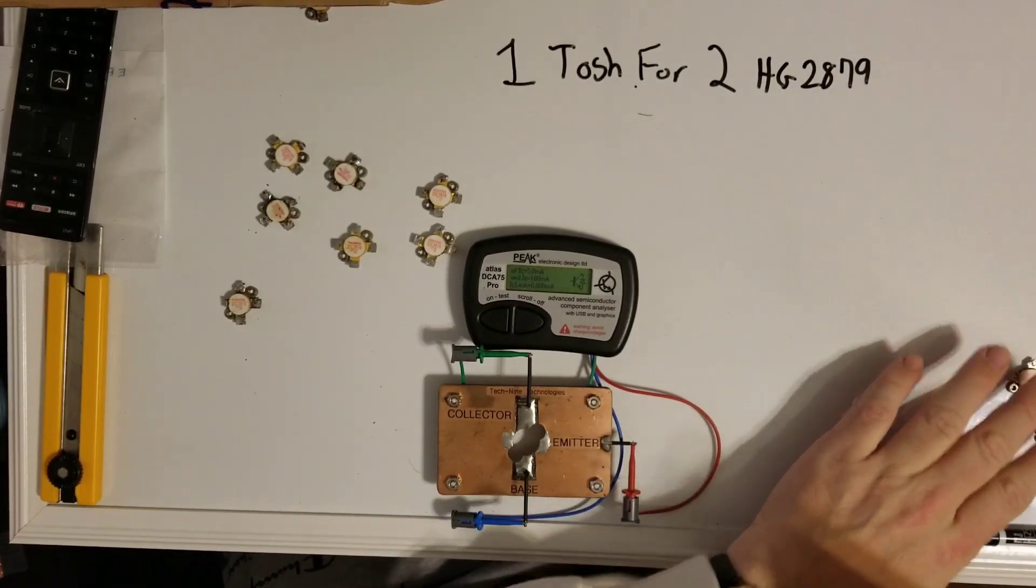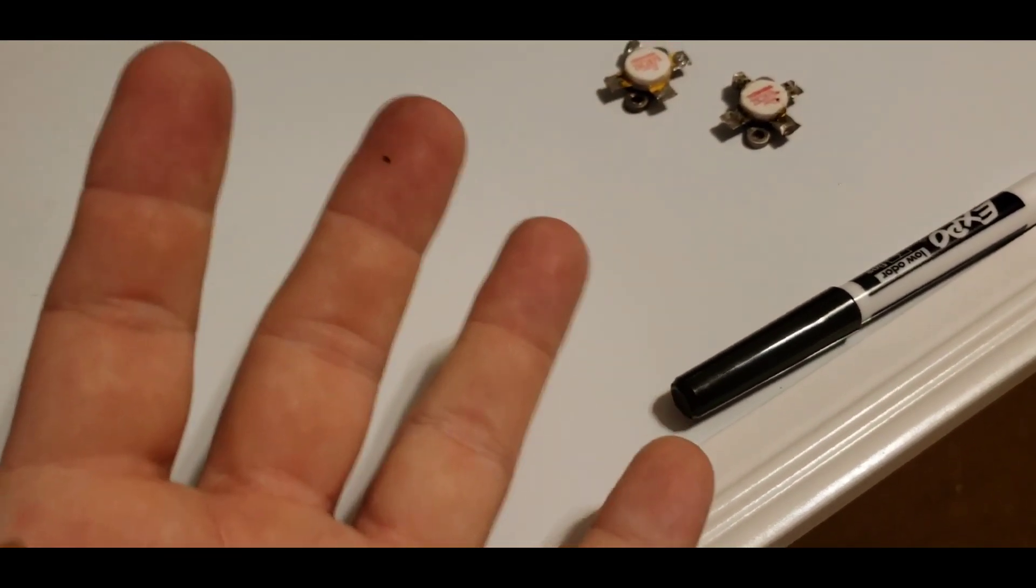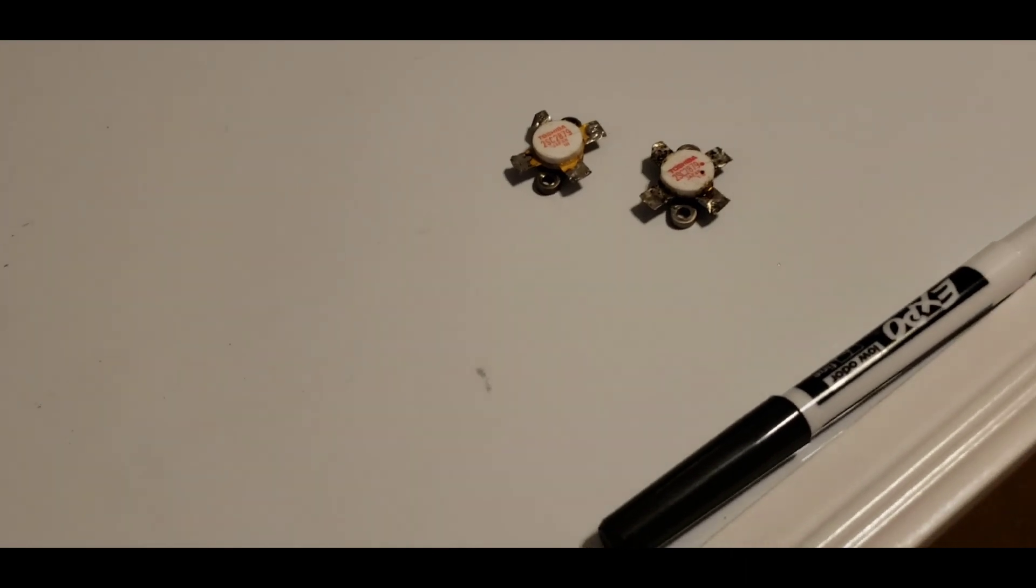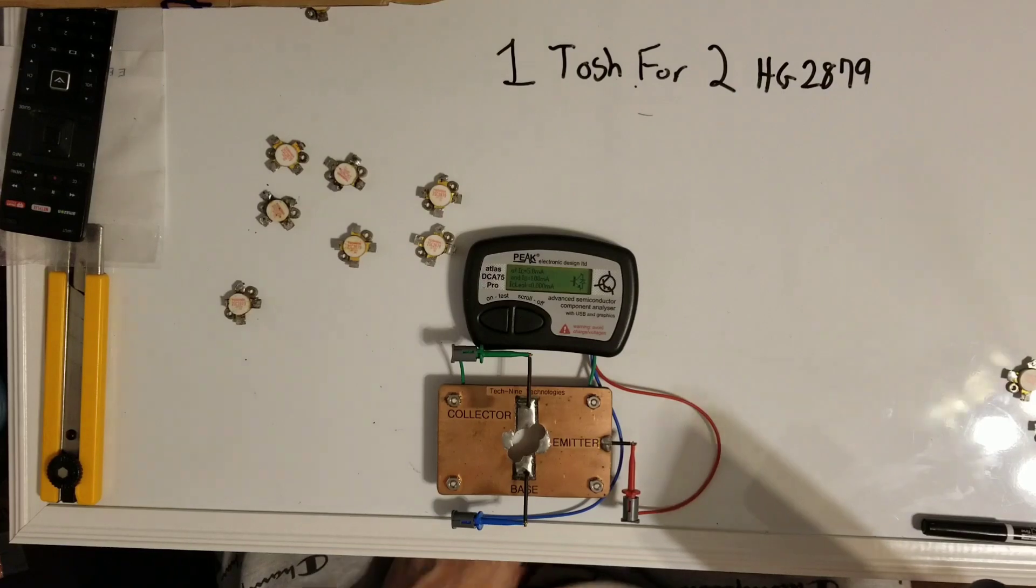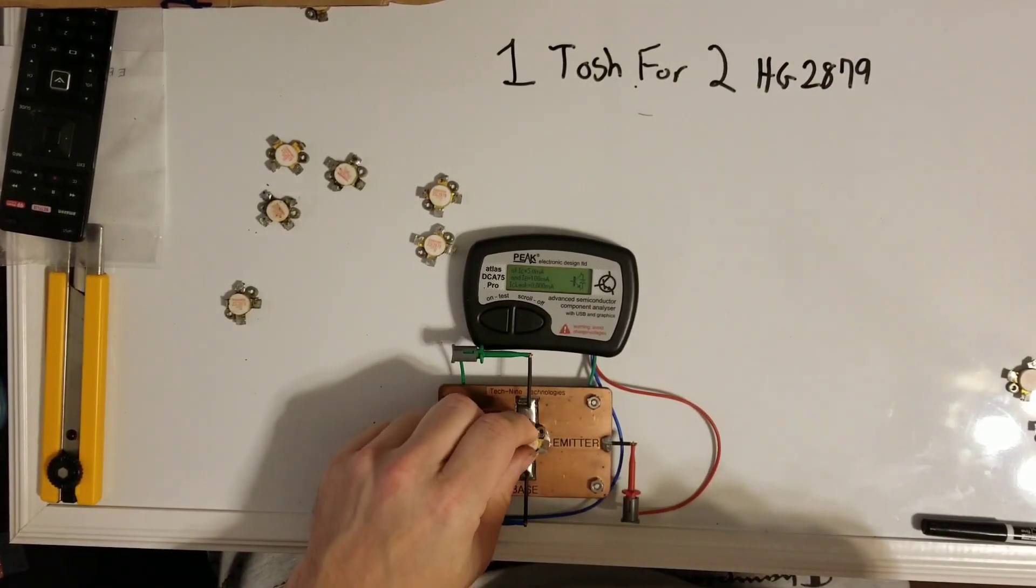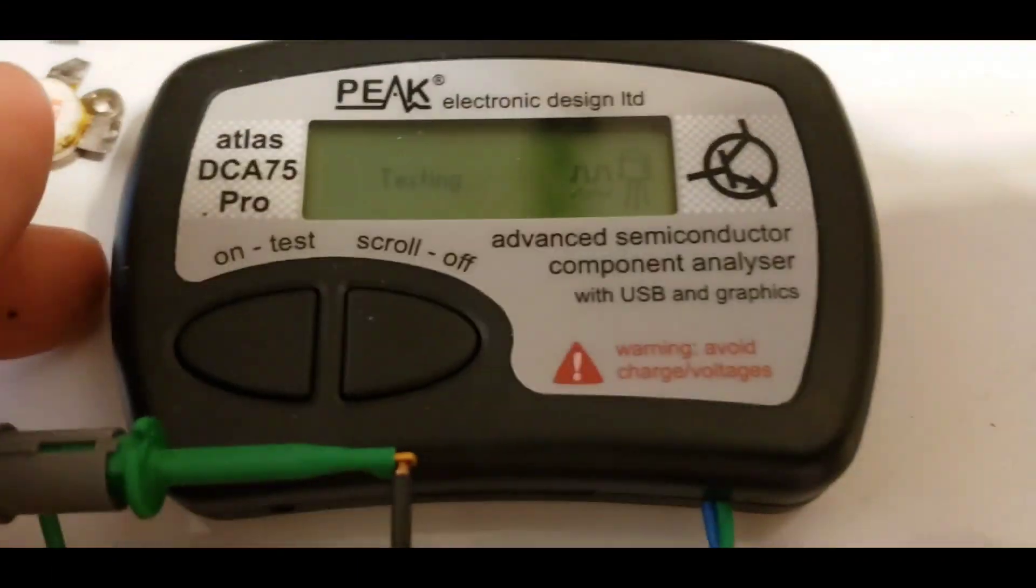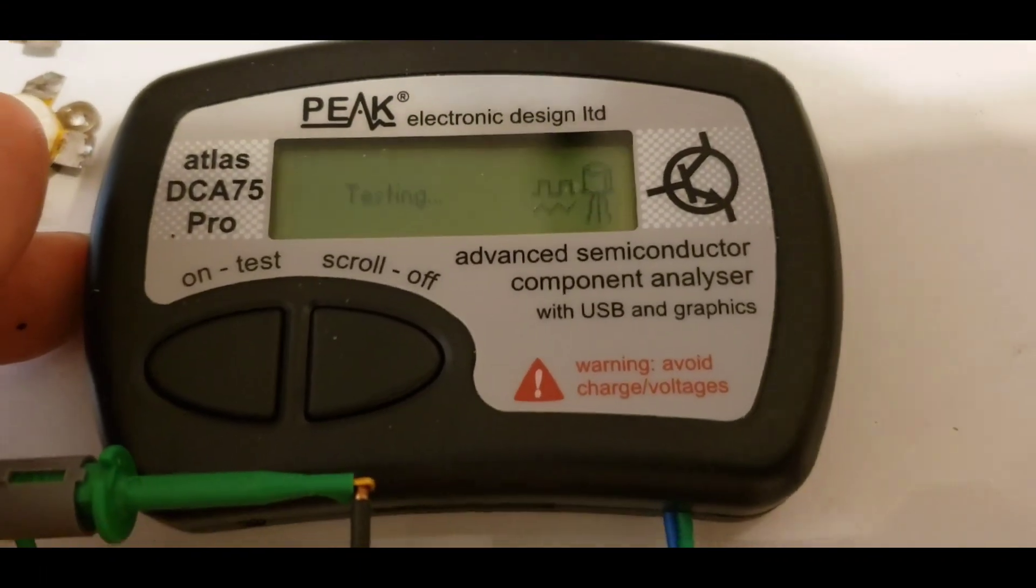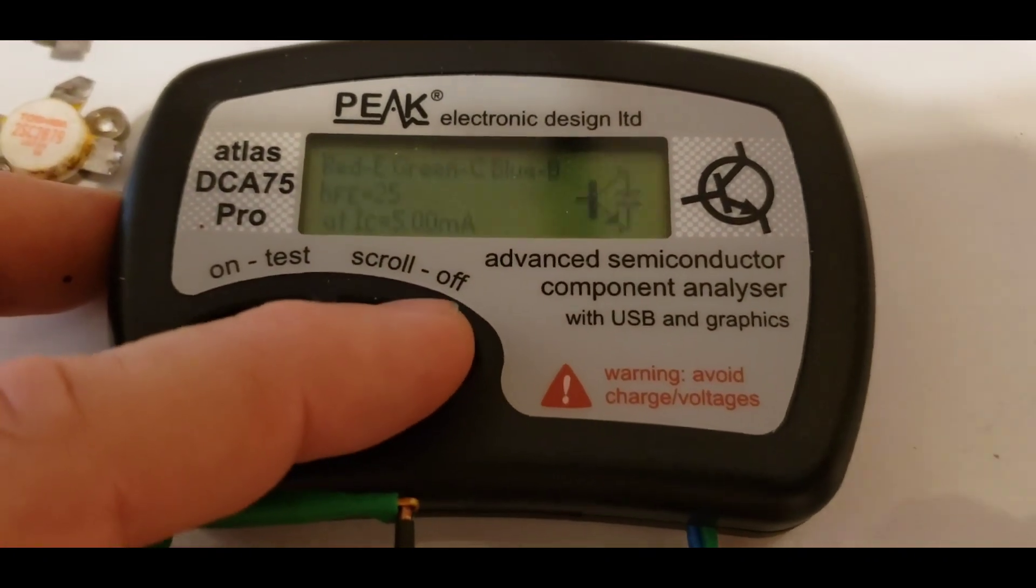That was good. So this guy right here has already gained himself four HG 2879s. Let me say it again. Just him with having these two, trading these in, he has gained four. Four HG 2879. He can now build him a brand new four pill just for trading them two little transistors in. Like my buddy Kevin said, it's like sore meat, you just can't beat it.